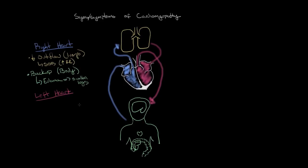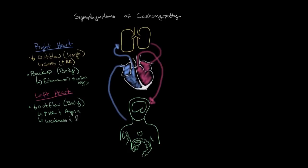If the left heart is having decreased outflow, that's going to result in symptoms in the body because the left heart goes to the body. One of these symptoms is that the blood going to the heart muscle itself is reduced, and the heart responds by increasing the heart rate. The muscle can also get really painful, and this chest pain or heart muscle pain is known as angina. Other effects of decreased outflow from the left heart include weakness and fatigue in the muscles.